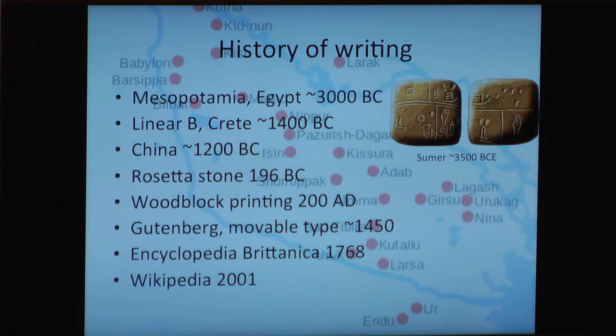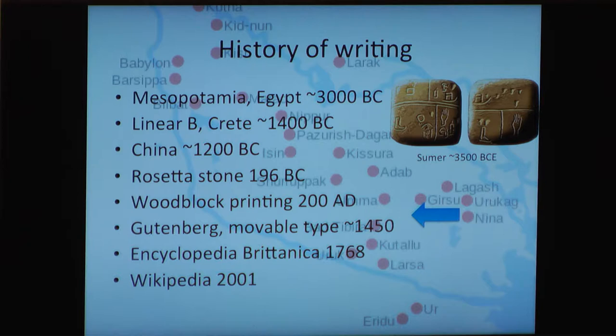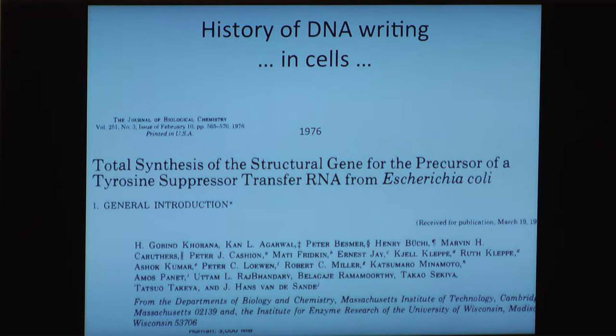Here's the history of writing — it goes way back. George will tell you he's already encoded an entire movie in DNA. But when we talk about DNA writing in cells, we're kind of in the Gutenberg phase: we can write millions of letters of DNA, but that's about it. We have a long way to go — we're actually just at the very beginning of this project.